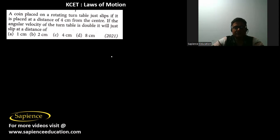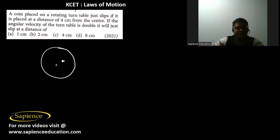Please install our Sapiens Education application, whose link has been provided in the description. Here it is told that a coin is placed on a rotating turntable. The coin is placed and here is the center, so it will rotate with an angular velocity omega. It will slip at a distance of 4 centimeters. If the angular velocity of the turntable is doubled, at what distance will it just slip?